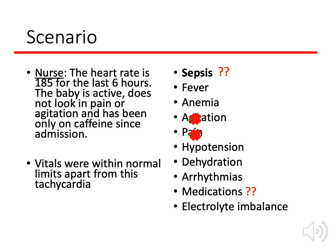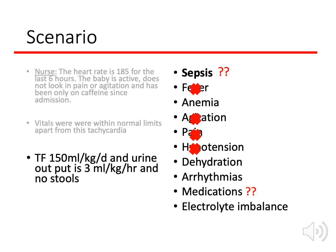With normal vitals, fever and hypotension are removed from the differential. We further narrow the diagnosis, but sepsis, anemia, dehydration, arrhythmia, medications, and electrolyte imbalance remain. Looking at the patient file, the baby is on 150 ml/kg/day and urine output is 3 ml/kg/hour with no stools. Dehydration can now be ruled out — the baby is receiving enough fluid and passing adequate urine, so dehydration does not fit.